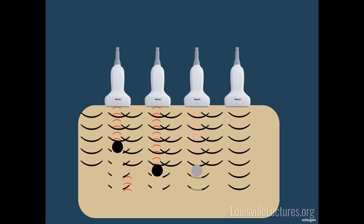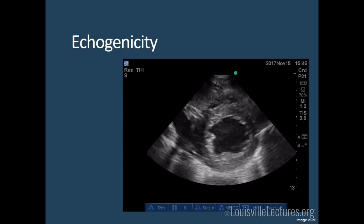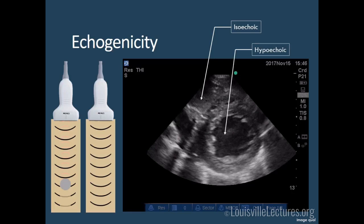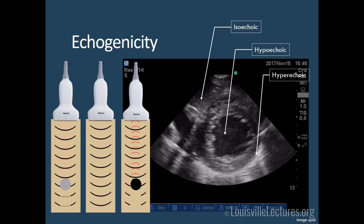Echogenicity: if something is isoechoic, it's that gray semi-solid appearance with some waves reflecting and some conducting through. Liver echotexture is isoechoic, and myocardium looks similar. Blood in the left ventricle is hypoechoic — it allows waves to pass through completely without reflecting. The pericardium is hyperechoic, reflecting almost all waves. That's how the transducer makes sense of an image and produces a B-mode picture.